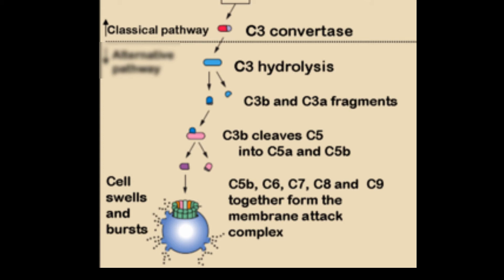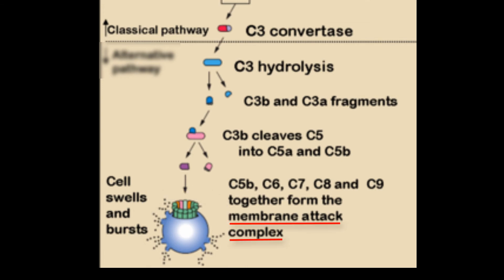After C5B has been formed, it will attract other complements — C6, 7, 8, and 9 — which are not divided into A and B parts; they are complete. These will form a spore-like structure where C9 will penetrate like a stick, making a hole in the bacterial cell wall. This complex is called MAC — the Membrane Attack Complex — which attacks the membrane.